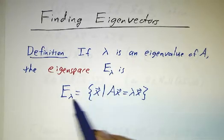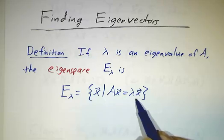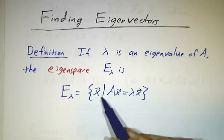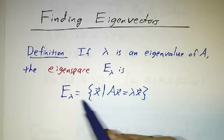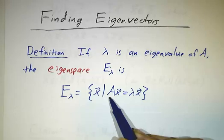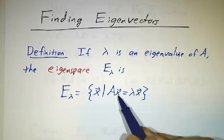The eigenspace is a set of all solutions to Ax equals λx. And this is almost the same thing as the set of all eigenvectors with eigenvalue λ. The one exception is that 0 is in the eigenspace and eigenvectors are supposed to be non-zero. But aside from that one exception, this is basically the set of all eigenvectors with that particular eigenvalue.